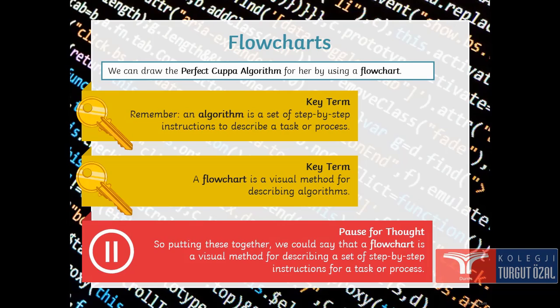Think about this. So, putting this together we could say that a flow chart is a visual method of describing a set of step by step instructions for a task or process.